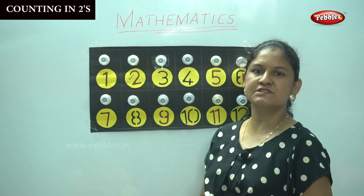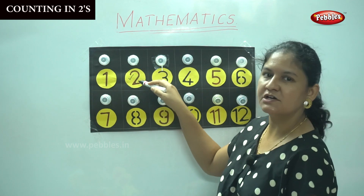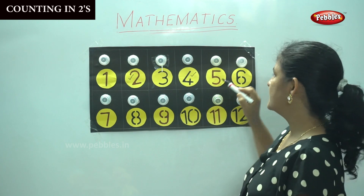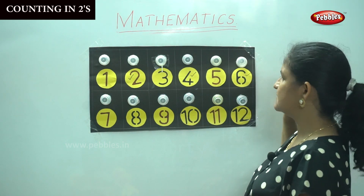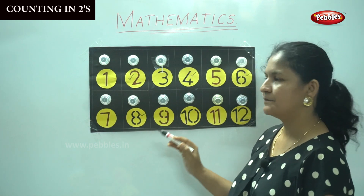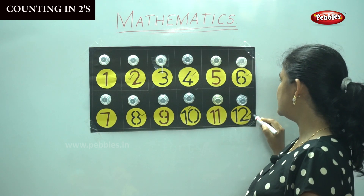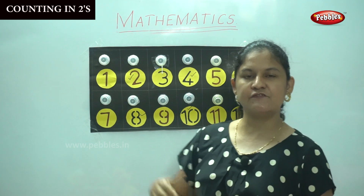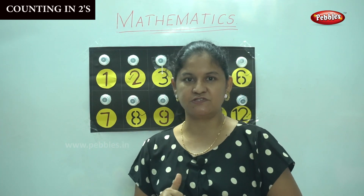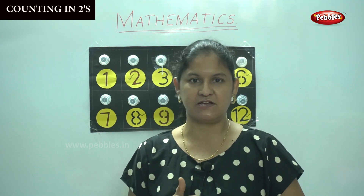Now I am going to show you how to skip count in twos. 1, 2 — number 2. 3, 4 — number 4. 5, 6 — number 6. 7, 8 — number 8. 9, 10 — number 10. 11, 12 — number 12. You will leave a number in between and count in twos. By learning skip counting in twos, you will be able to do the 2 times table, which we will be learning soon.